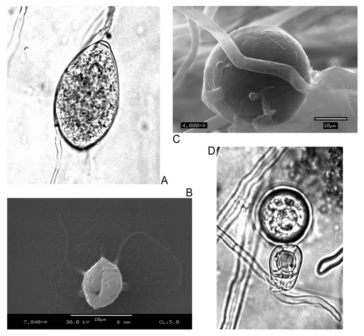The oomycetes rarely have septa, and if they do, they are scarce, appearing at the bases of sporangia and sometimes in older parts of the filaments. Some are unicellular, but others are filamentous and branching.